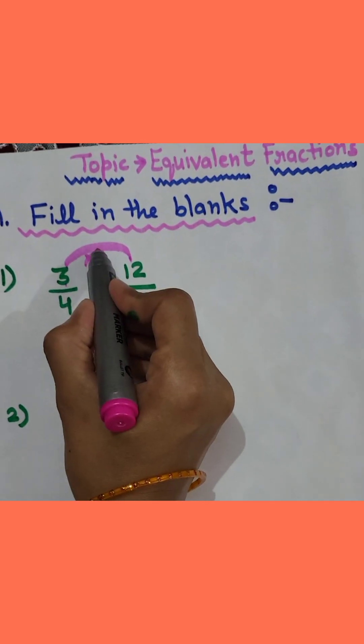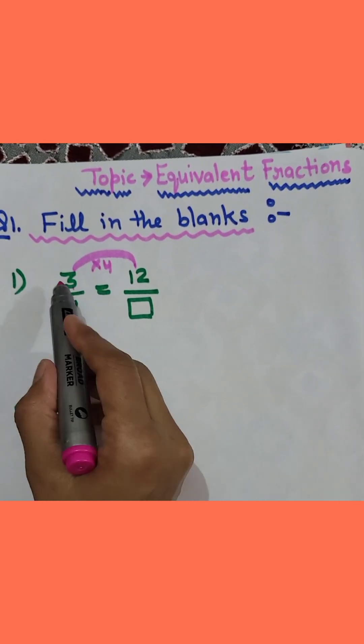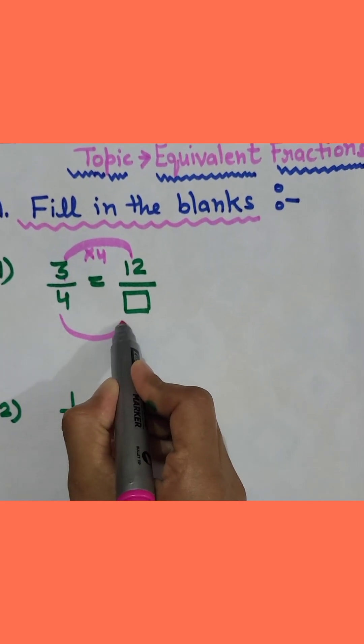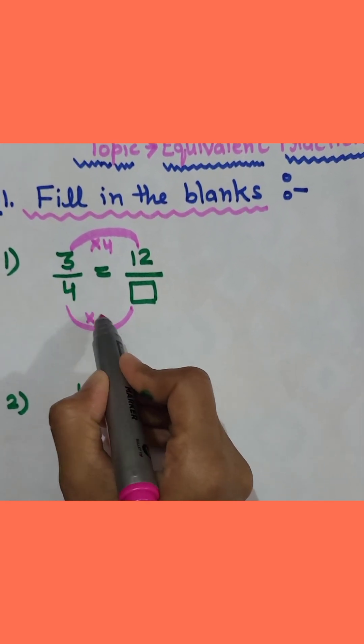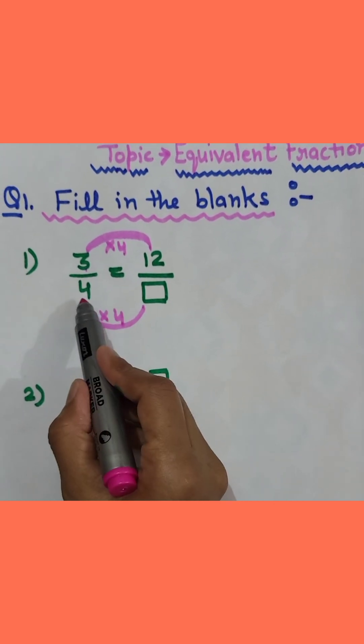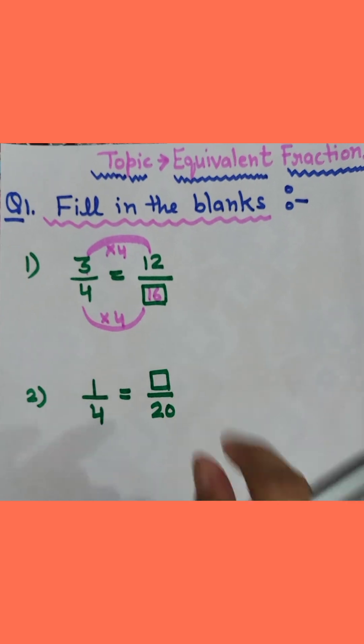So 3 fours are 12, and in equivalent fraction you will multiply the numerator and denominator by same number. So here also we will multiply 4 by 4 because that should be same. So 4 fours are 16. So our answer will be 16.